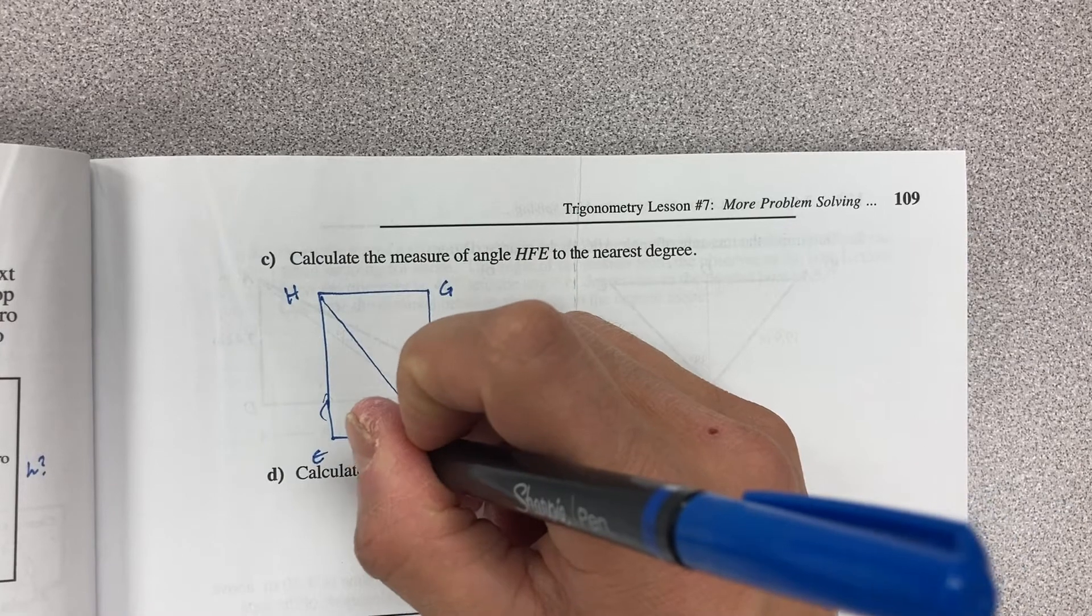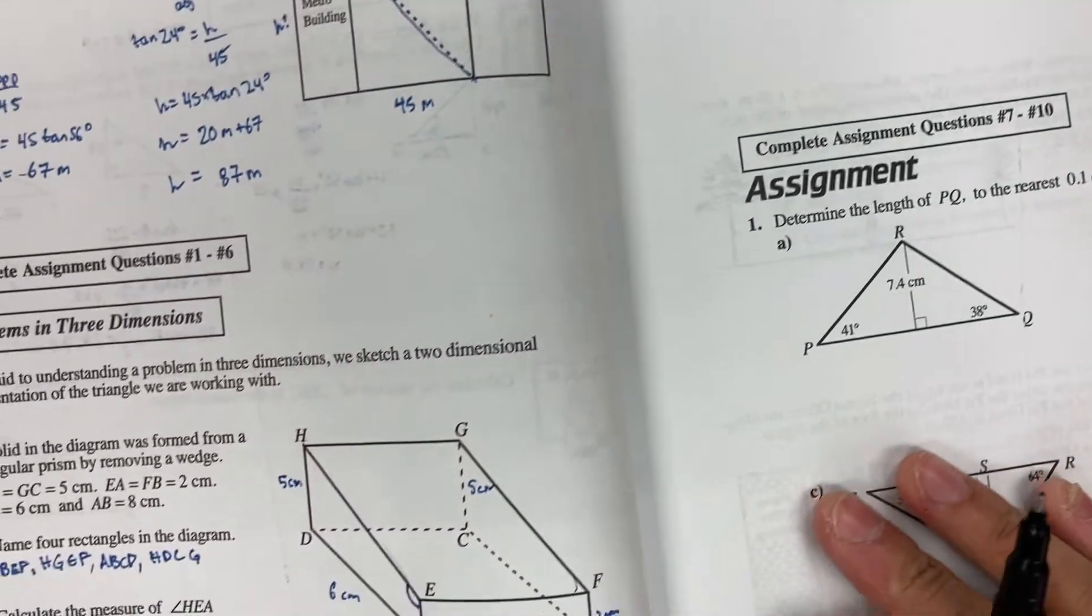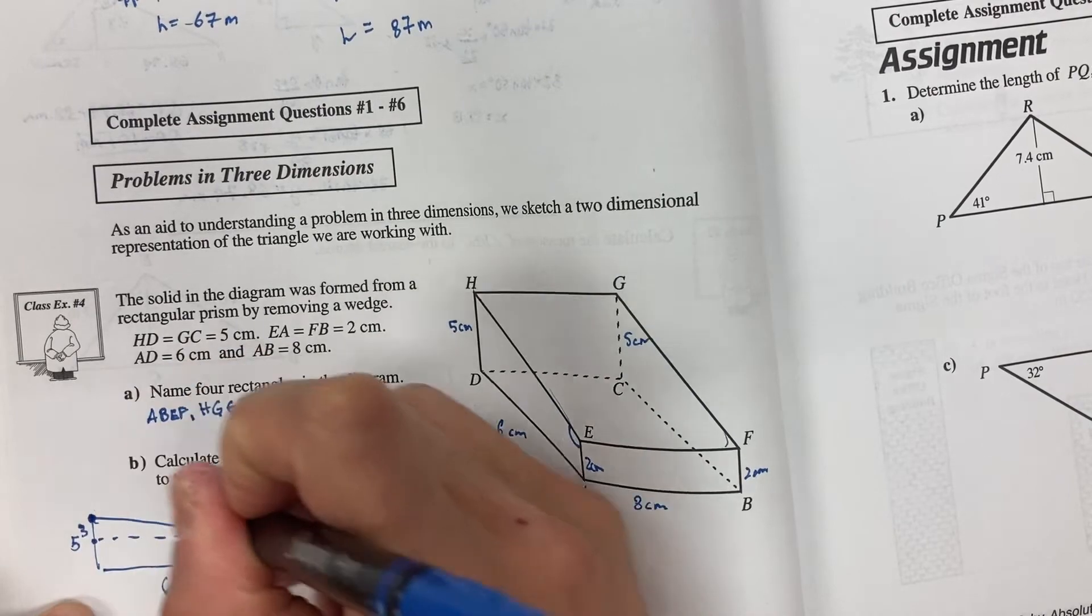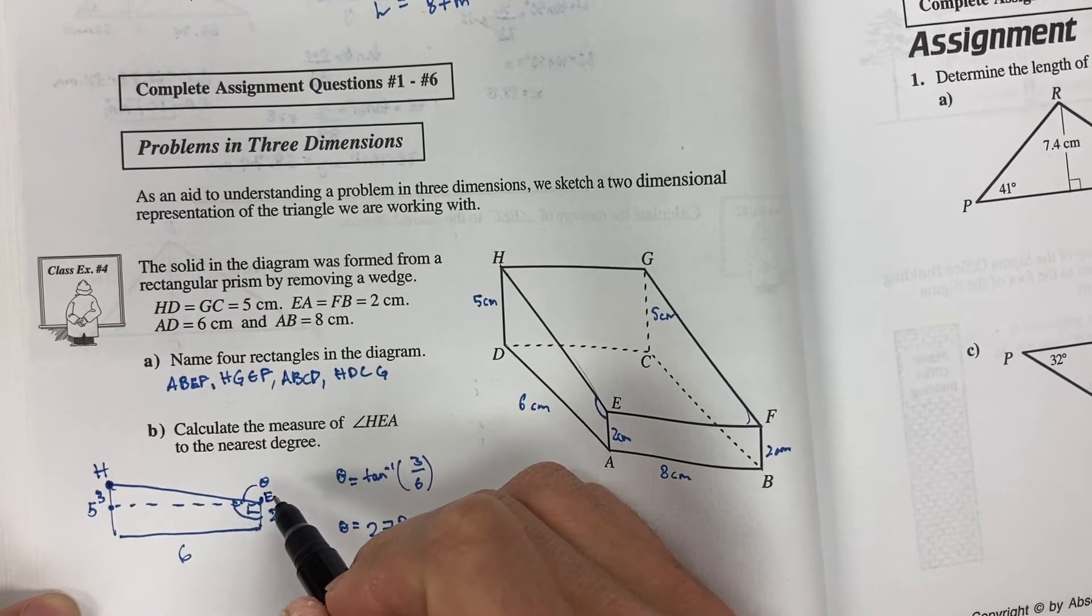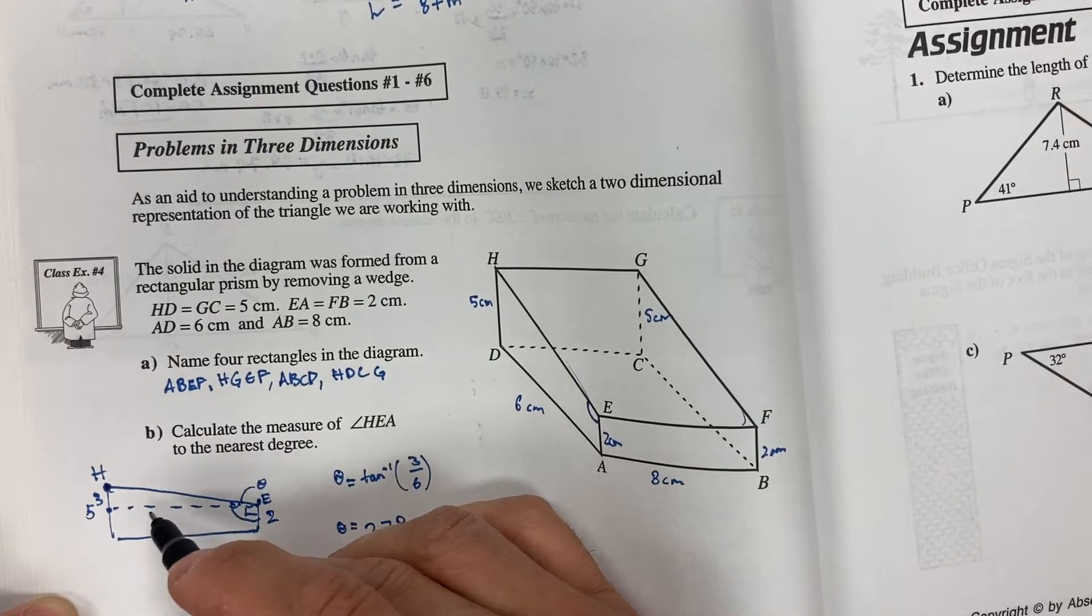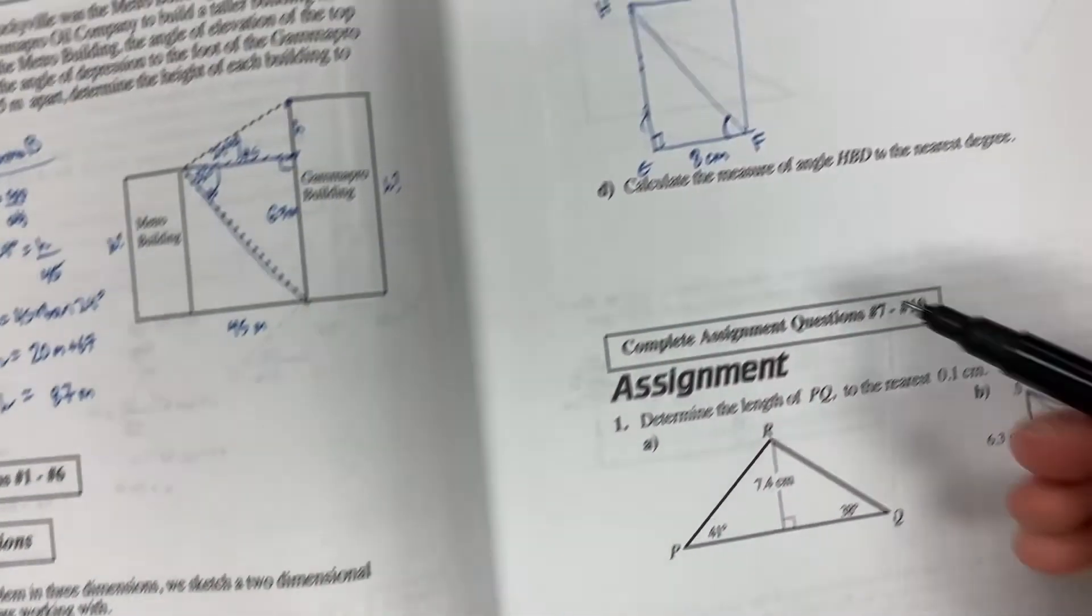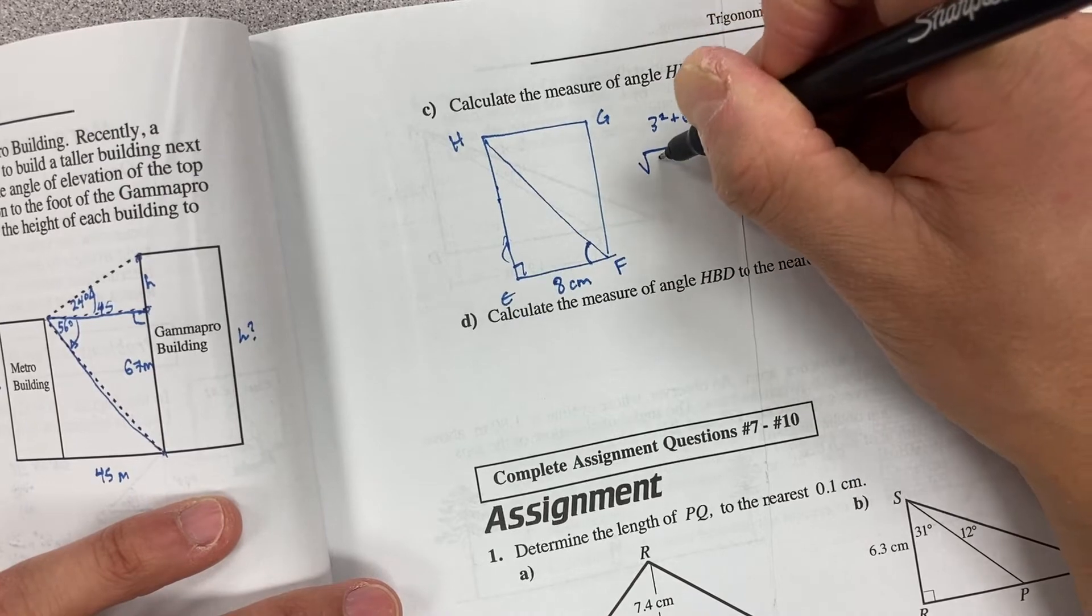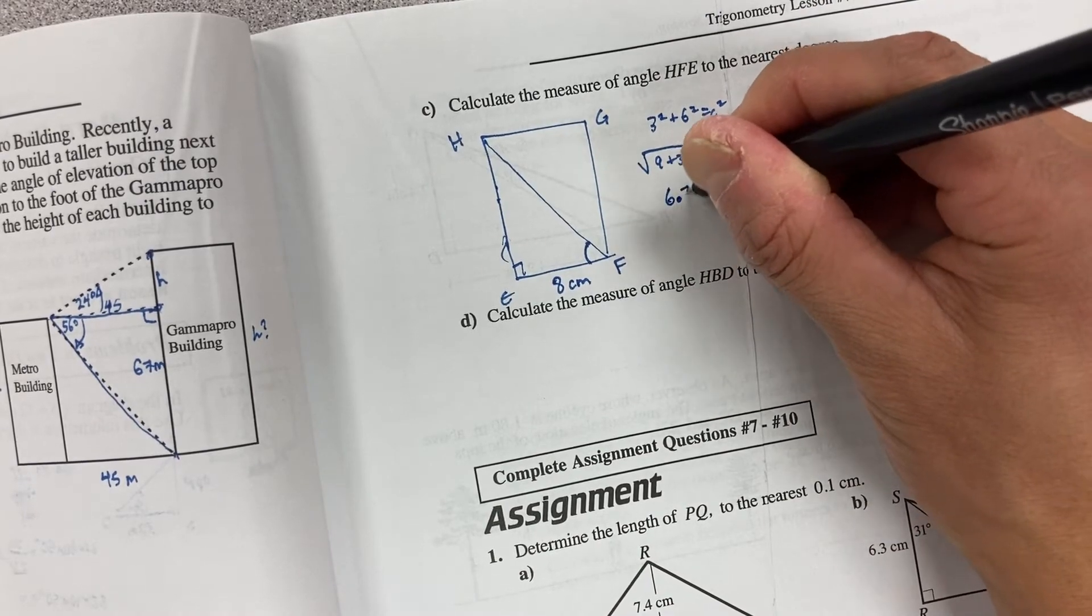Now there's only a few pieces of information I know. I only know that this is eight centimeters and that's it. I don't know what this side length here is. Now in order to find out that side length HE what I need to do is find out what this side length is here because this is also HE. So if I find out this side length of HE which I could do by using my Pythagorean theorem. So three squared plus six squared is equal to HE or C squared. And then the square root of nine and 36 is equal to my value of C. And what I get there for my value of C is 6.7 if I round.